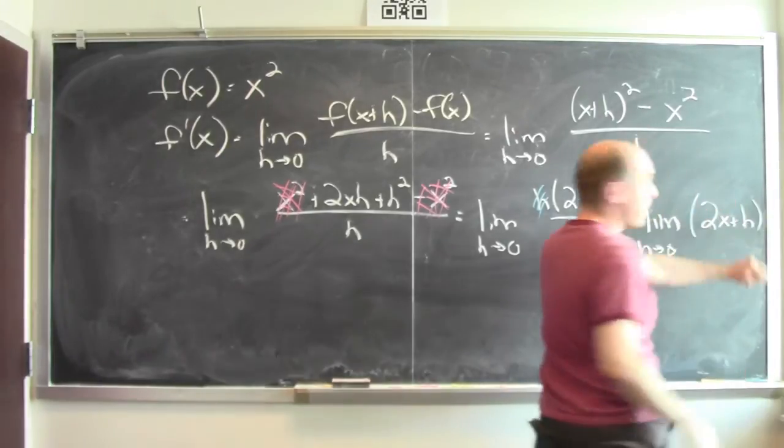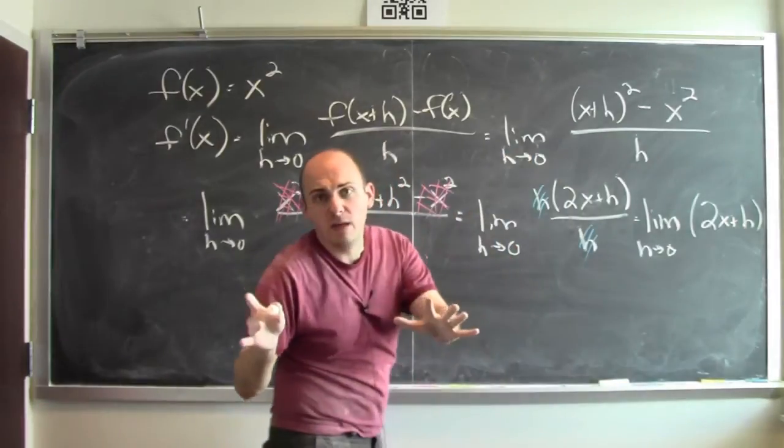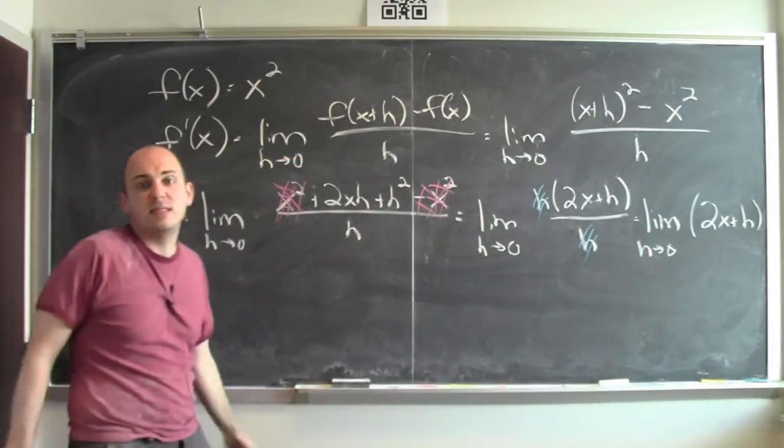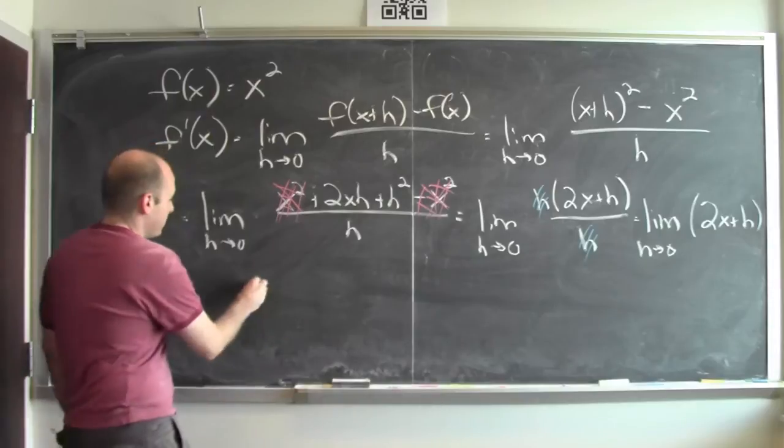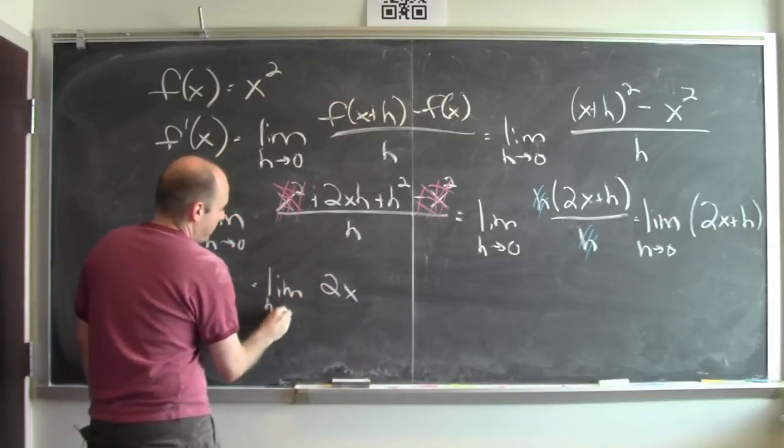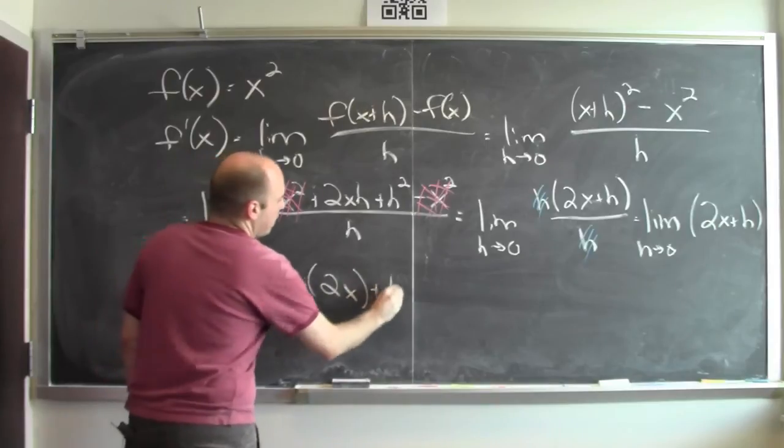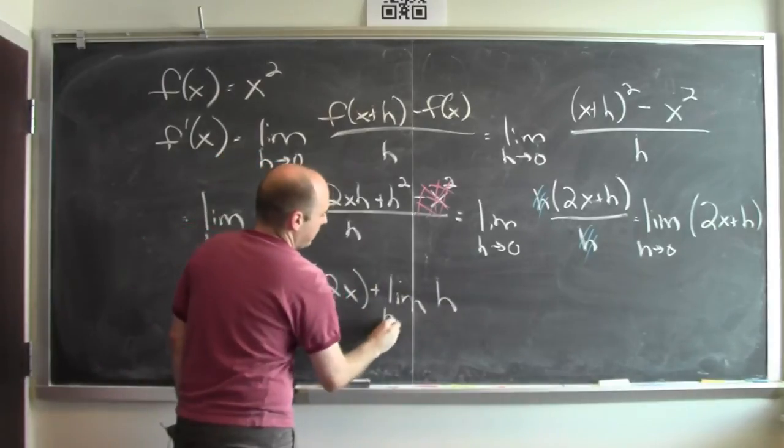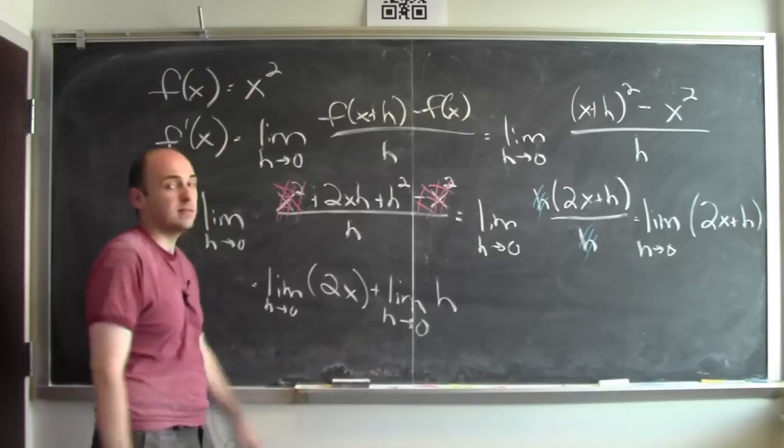Now how do I take the limit of 2x + h? That's a limit of a sum. And the limit of a sum is the sum of the limits. So this is the same as the limit of 2x as h goes to 0 plus the limit of h as h goes to 0, as long as these limits exist. But they do.